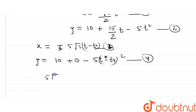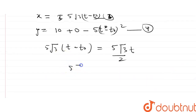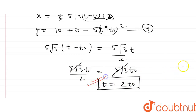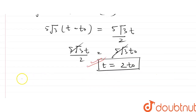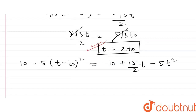Equating the x equations: 5√3·(t − t0) = (5√3/2)·t. This simplifies to 5√3·t/2 = 5√3·t0, giving us the important relation t = 2·t0. Now let's solve the y equations: 10 − 5·(t − t0)² = 10 + (15/2)·t − 5t².